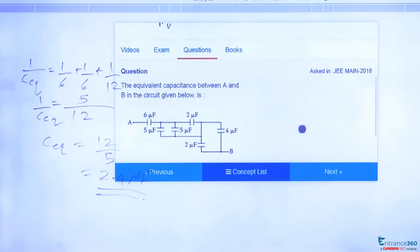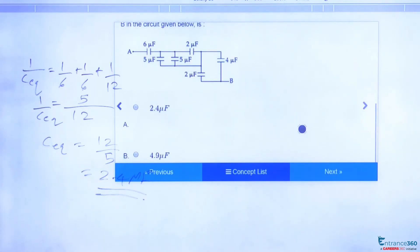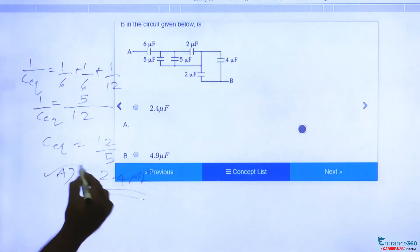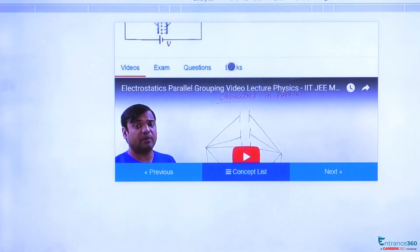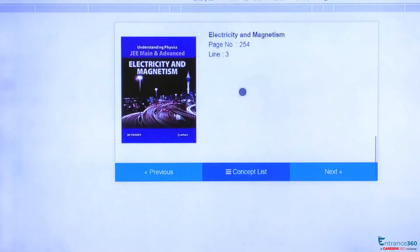So this is our option A. The option is A. To know more about this concept, that is parallel and series grouping, you can watch the video here and you can go through books: NCERT, then DC Pandey.